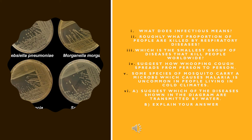The next question is: Suggest which of the diseases shown in the diagram are transmitted by water. Diarrheal diseases are transmitted by water, because most germs that cause watery diarrhea are spread through contaminated food and water, often due to unsanitary conditions or practices. The best way to prevent infections that cause watery diarrhea is drinking clean and filtered water.